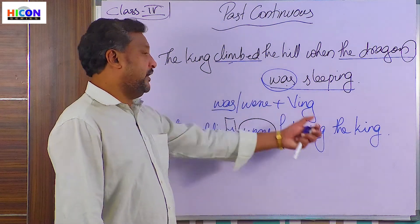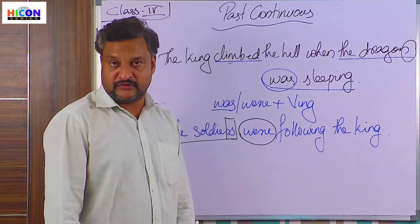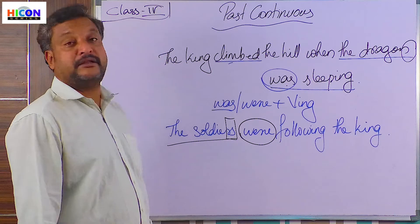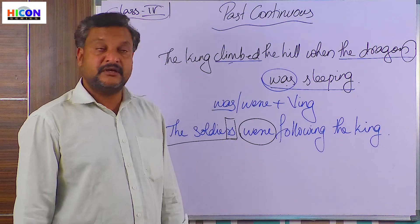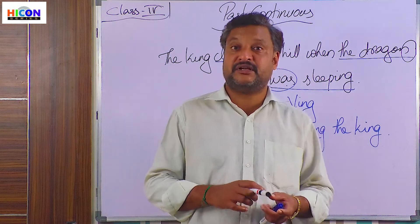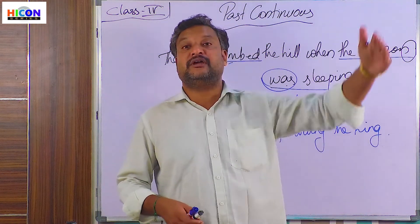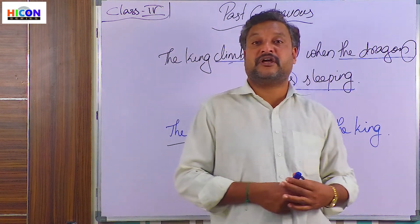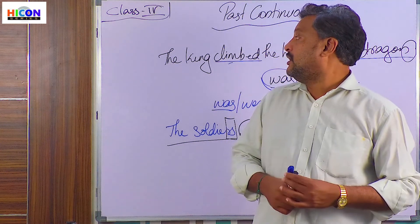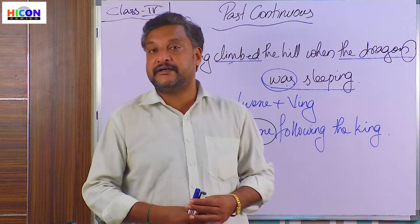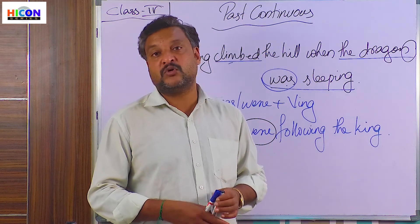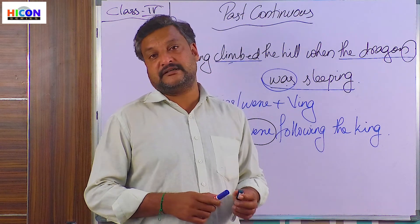So, 'was' or 'were' plus the ing-form of the verb is the structure of past continuous tense. Past continuous tense is used to express an action that was continuing at a point of time in the past. Now we have an activity related to this, and then we will go on to the past perfect tense.